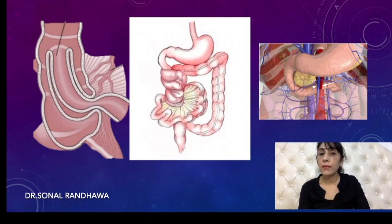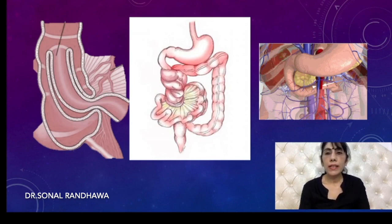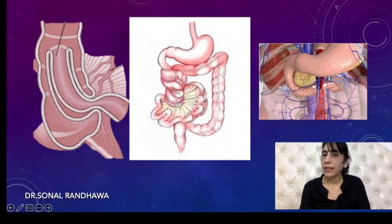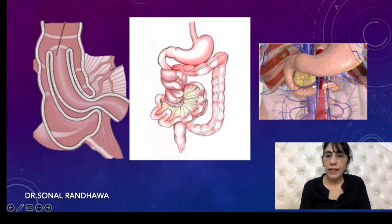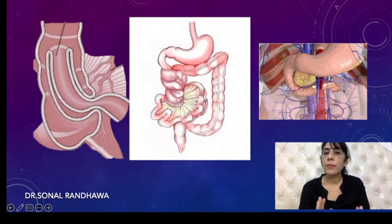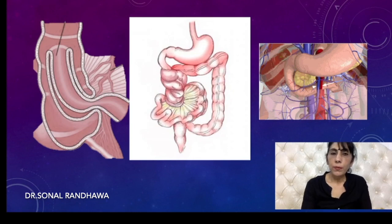Now let's look at the normal relationship between the superior mesenteric artery and the superior mesenteric vein. As we can see, the superior mesenteric vein is towards the right and the superior mesenteric artery is towards the left. This is the normal position of both vessels.